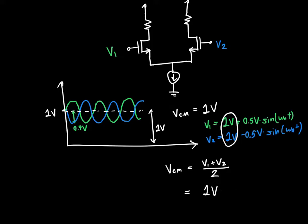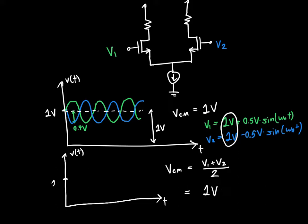If we plot the common mode voltage, with the x-axis implicitly being time and the y-axis being voltage — in engineering we often drop the axis labels since the x-axis is almost always time or frequency and it's obvious from context — our common mode voltage VCM is a constant one volt. It's not a function of time, which is exactly what we'd expect.